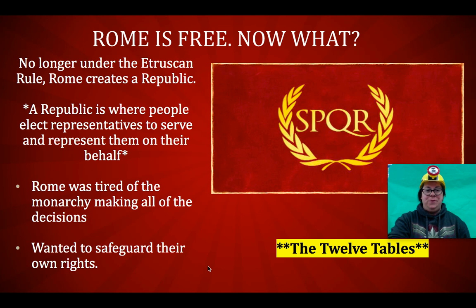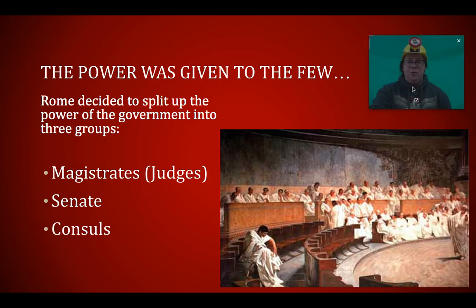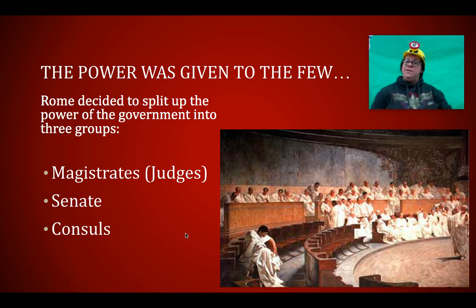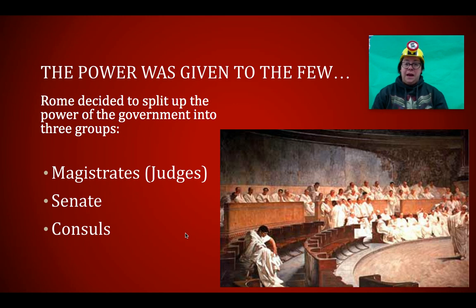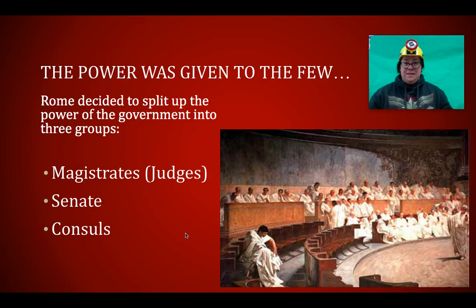So what else happened now that Rome was free? Well, they figured out who was going to have power. The power, although not given to everyone, was given to a few — which is still better than one king. Rome split up the power of government into three groups: the magistrates or judges, the senate, and the consuls, which is very similar to how America has its government. America has the judicial branch, which is the judges; the executive branch, which would be the consuls — a president and a vice president; and the senate and house of representatives, or legislative branch. Same system of government.